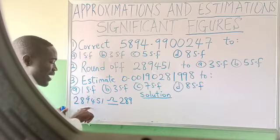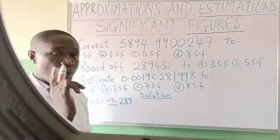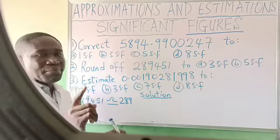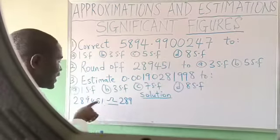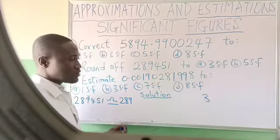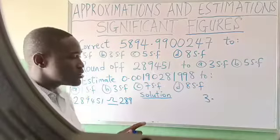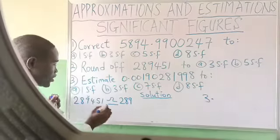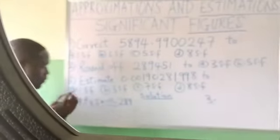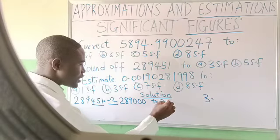Now, does this number have a decimal point? Every number has a decimal point — it can be visible or invisible. For a number like 289451, the decimal point is invisible, located at the back of the number. Any number without a visible decimal point has its decimal point at the back. So automatically, here is the decimal point of this number, meaning we have three numbers before the decimal point to replace with three zeros.